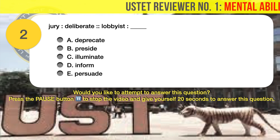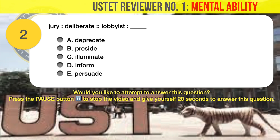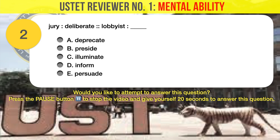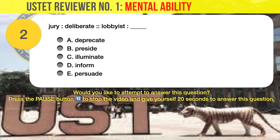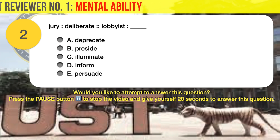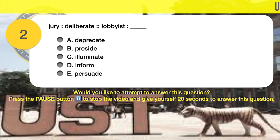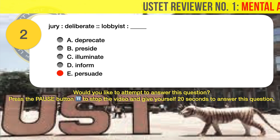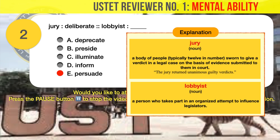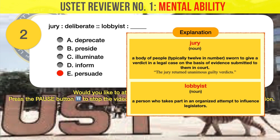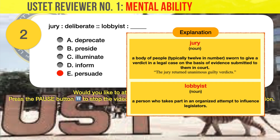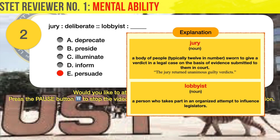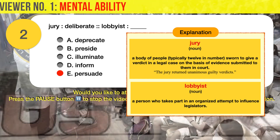Question number 2. Jury is to deliberate, in the same manner that lobbyist is to blank. A. Deprecate, B. Preside, C. Illuminate, D. Inform, E. Persuade. The correct answer is E, Persuade. A jury is a body of people that deliberate or engage in long and careful consideration of facts before arriving at a decision. A lobbyist pertains to a person who attempts to influence or persuade legislators.